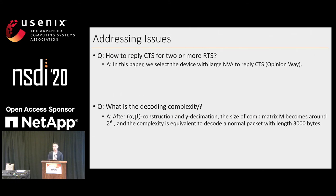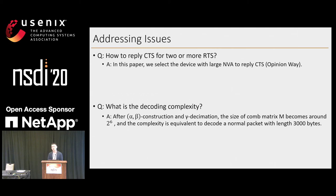We have some practical issues. The first one is how to respond to the CTS if two or more RTS are resolved. In our paper, we choose the device with larger LED to reply to the CTS, but this is just one optional way. The second question is complexity. After the alpha-bit construction and gamma-decimation, the size of M finally becomes 2 to the power of 6, which is very tiny. The complexity is equivalent to decoding a normal packet of 3,000 bytes.